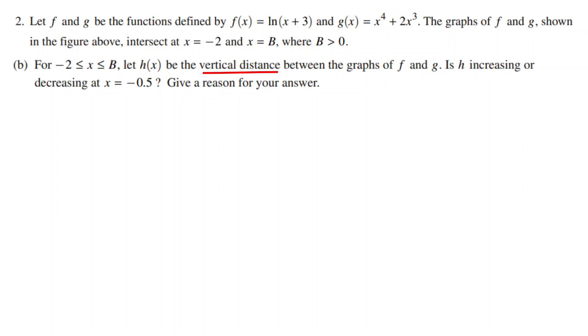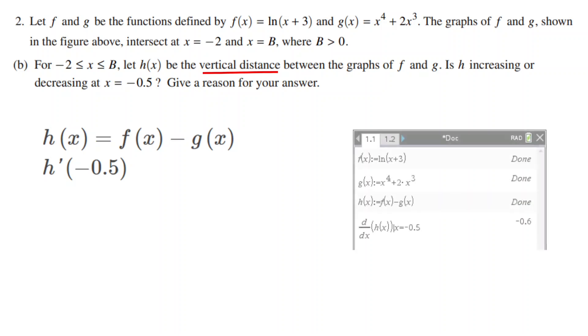So h(x) is the vertical distance between f and g. We just need to set h(x) equal to f(x) minus g(x). To find if it's increasing or decreasing at x equals -0.5, we find h'(-0.5). We plug this into a calculator and find that the value is -0.6.